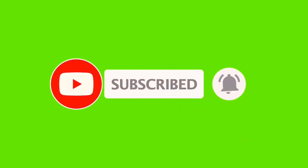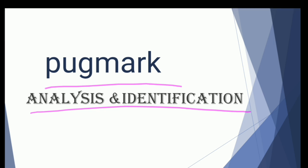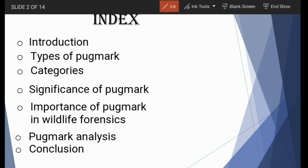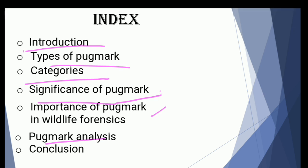Today we will discuss pug mark analysis, identification, and forensic significance of pug marks, along with how to differentiate between pug marks of different animal species — herbivore or carnivore — and the types of pug mark impressions that are formed. Topics covered include introduction to pug marks, types, categories, significance, importance in forensic science, and how analysis is done to differentiate pug marks found at a crime scene.